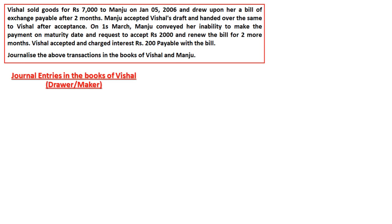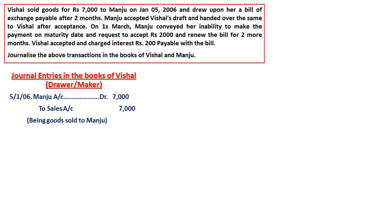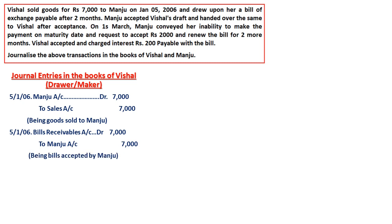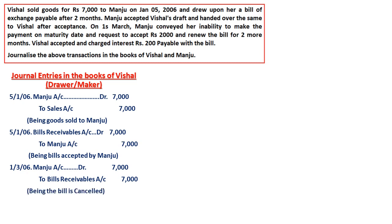Journal entries in the books of Vishal, that is the drawer. First, the sale entry on January 5th, 2006: Manju Account debit to Sales — being goods sold to Manju. Then the bills receivable entry: Bills Receivable Account debit to Manju Account — being bills accepted by Manju. On March 1st, 2006, the bill accepted by Manju is cancelled on her request: Manju Account debit to Bills Receivable Account — this is the cancellation entry.